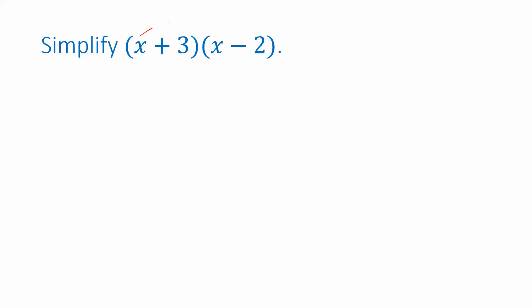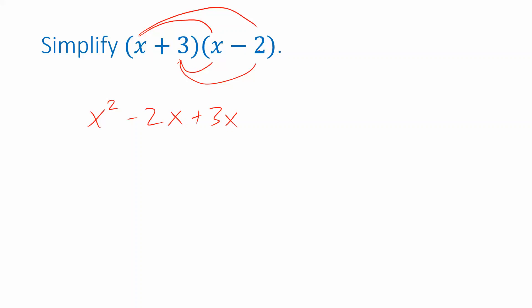One way we can do that is to multiply the x in the first set of parentheses by everything in the second set of parentheses, and the 3 in the first set of parentheses multiplies everything in the second set. So when we expand this we get x times x, which is x squared, x times negative 2 is minus 2x, 3 times x is plus 3x, and 3 times negative 2 is minus 6. Then we combine like terms: minus 2x plus 3x combines to plus x, giving us x squared plus x minus 6.